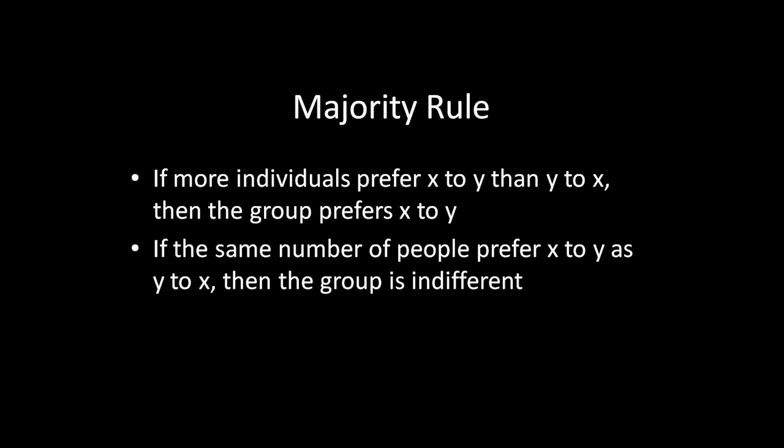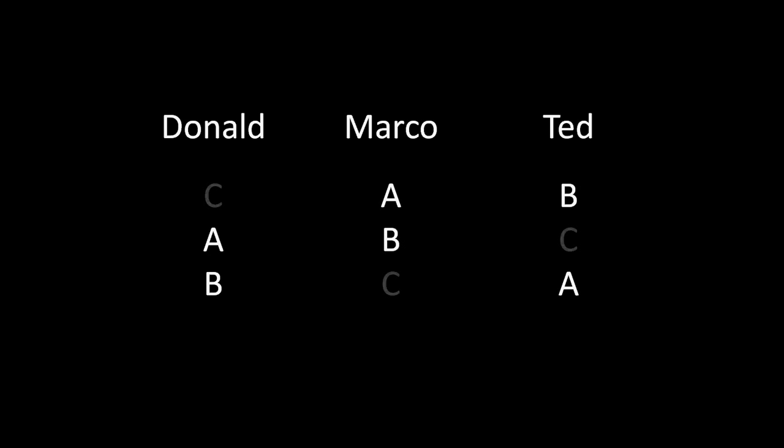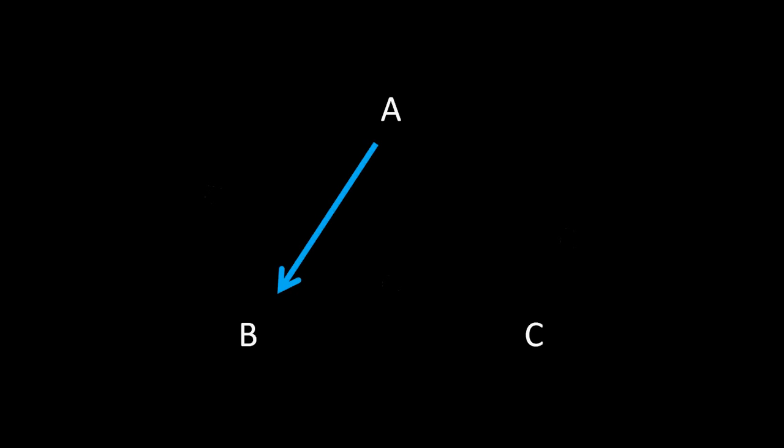The social preference function of majority rule is going to look at the preferences of Donald, Marco, and Ted, and then use this algorithm to spit out a group preference. So let's go ahead and do this together. Majority rule is going to be looking at these pairwise comparisons, two different outcomes at a time. Let's start by looking at A versus B, Armenian food versus Brazilian food. Donald prefers A to B, and Marco also prefers A to B. Ted is alone with his preference for B to A. So Ted is in the minority, Donald and Marco are in the majority, so the group preference is A to B, Armenian food to Brazilian food.